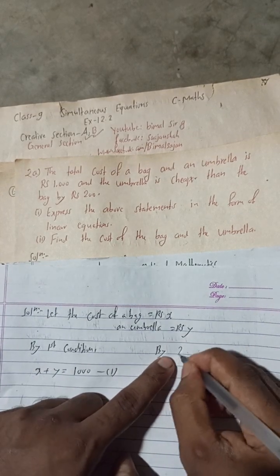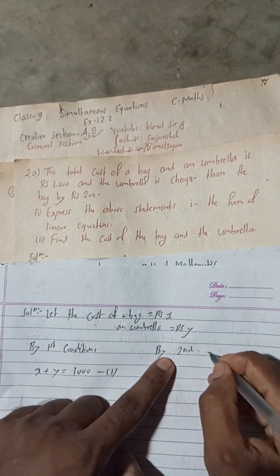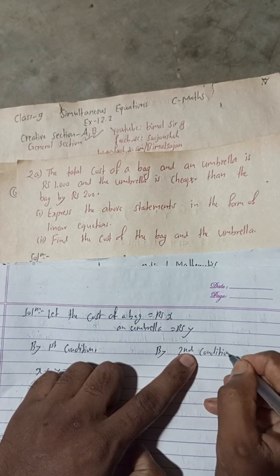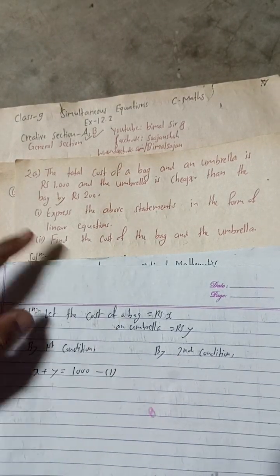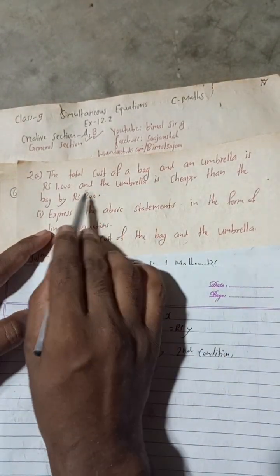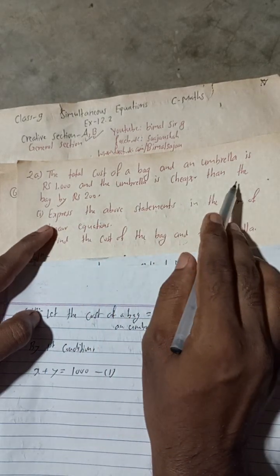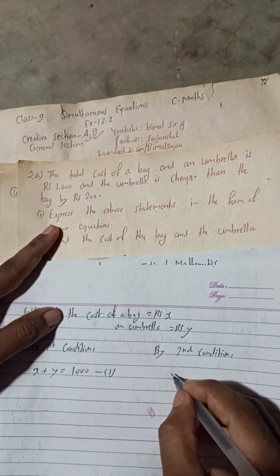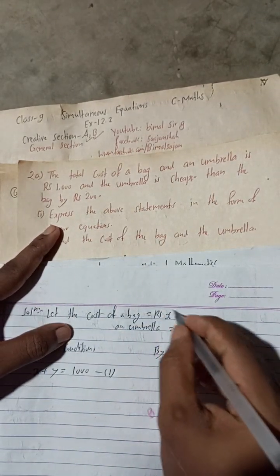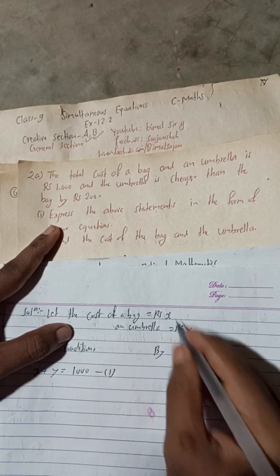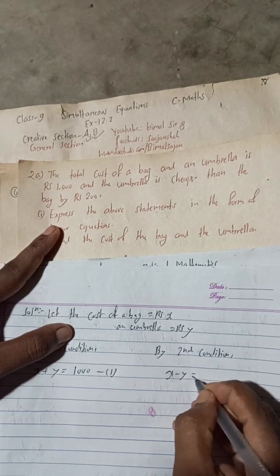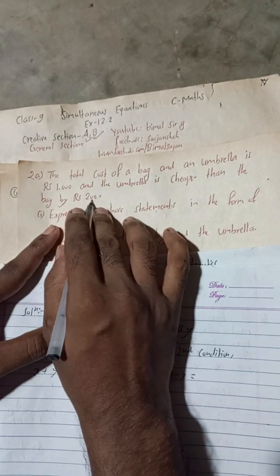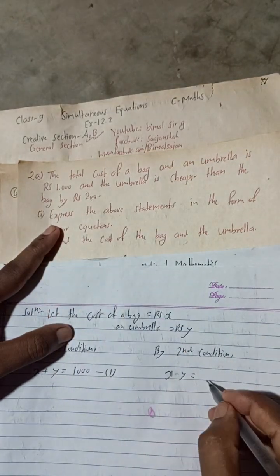Now by second condition: the umbrella is cheaper than the bag, that means the difference will be Rs 200. The greater value minus the cheaper value — so X minus Y is equal to 200.